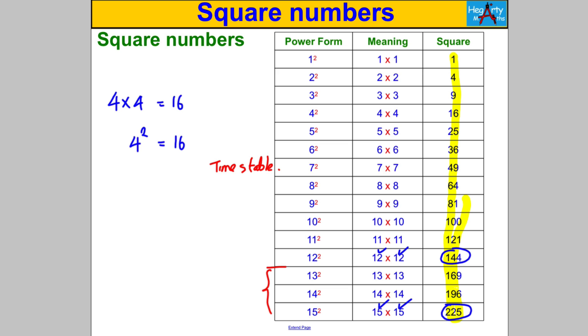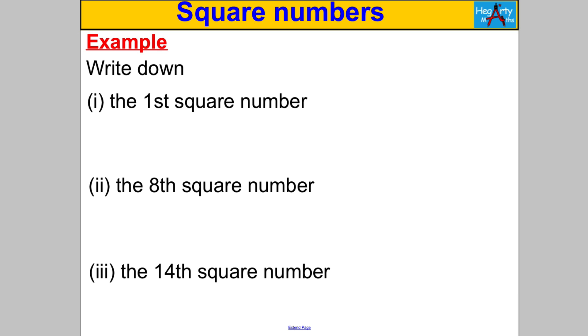Now we know what square numbers are let's do some questions. Write down the first square, the eighth square, the 14th square. Whenever you're asked to identify square numbers, straight away write them out: 1×1 is 1, 2×2 is 4, 3×3 is 9, 4×4 is 16, 5×5 is 25, 6×6 is 36, 7×7 is 49, 8×8 is 64, 9×9 is 81, 10×10 is 100, 11×11 is 121, 12×12 is 144, 13×13 is 169, 14×14 is 196 and 15×15 is 225. I want you to be able to list them as quickly if not quicker than I did.